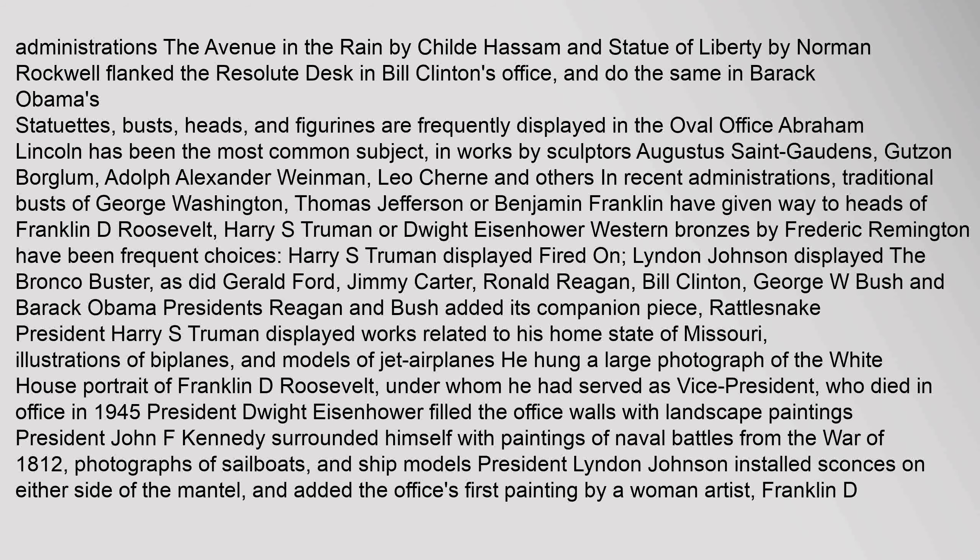Western bronzes by Frederick Remington have been frequent choices. Harry S. Truman displayed Fired On; Lyndon Johnson displayed the Bronco Buster, as did Gerald Ford, Jimmy Carter, Ronald Reagan, Bill Clinton, George W. Bush, and Barack Obama. Presidents Reagan and Bush added its companion piece, Rattlesnake. President Harry S. Truman displayed works related to his home state of Missouri, illustrations of biplanes, and models of jet airplanes. He hung a large photograph of the White House portrait of Franklin D. Roosevelt, under whom he had served as vice president, who died in office in 1945. President Dwight Eisenhower filled the office walls with landscape paintings.